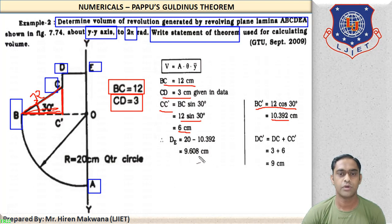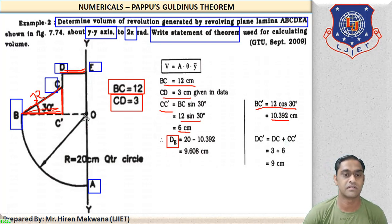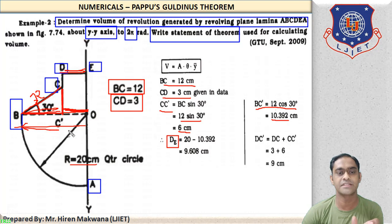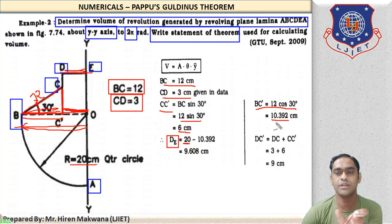Now what is DE? This is the horizontal length DE. The radius of this quarter circle is given as 20 cm. So from O to B, this distance is also 20 cm. We calculate C'O: total radius minus distance C'B gives C'O = DE. So DE = 20 − 10.392 = 9.608 cm.